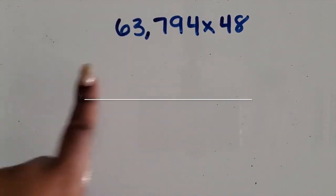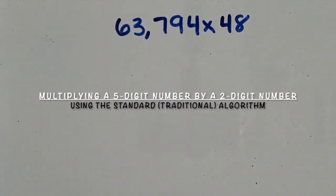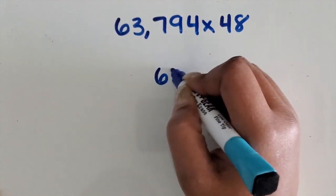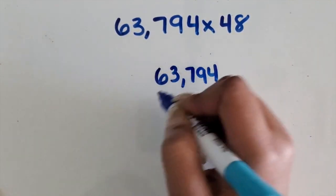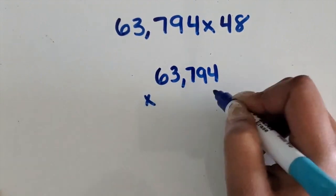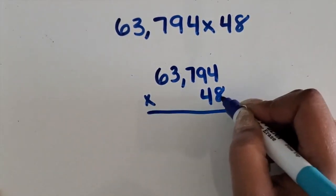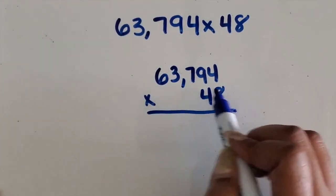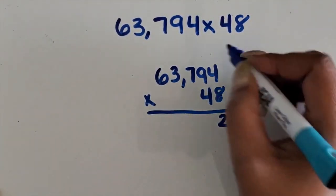We're going to multiply a five-digit number and a two-digit number using the standard or traditional algorithm. We're going to line our numbers up vertically and then multiply each digit separately. 8 times 4 is 32.